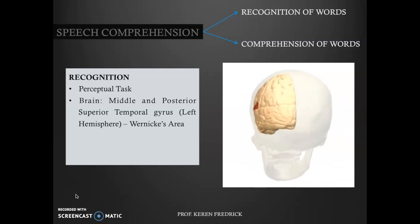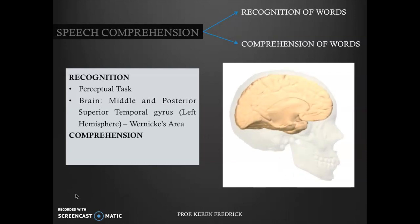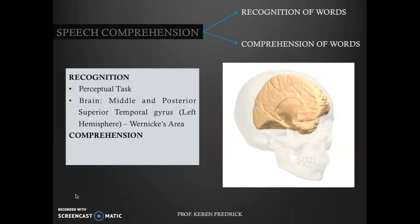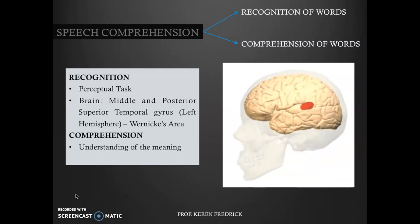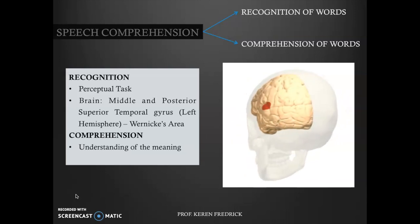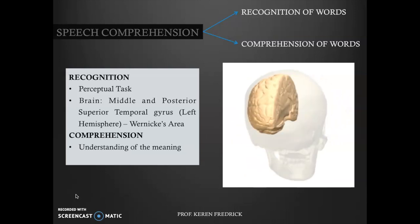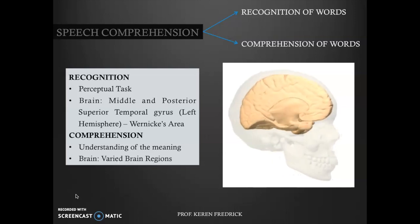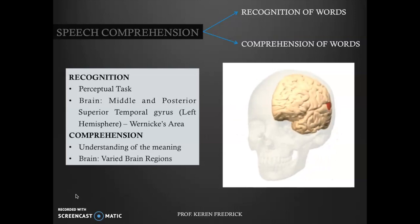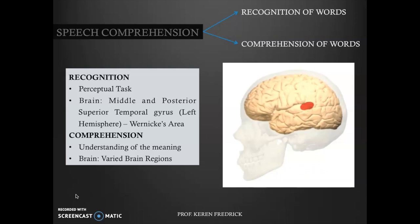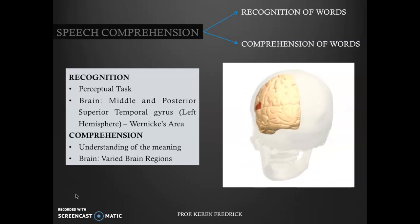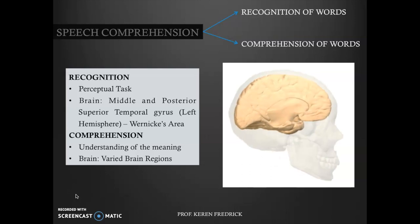The next aspect is comprehension. Comprehension is basically understanding the meaning of different words. With regards to brain regions, there are varied brain regions responsible for comprehension, and as we go through the slides we will be able to get to know this better.